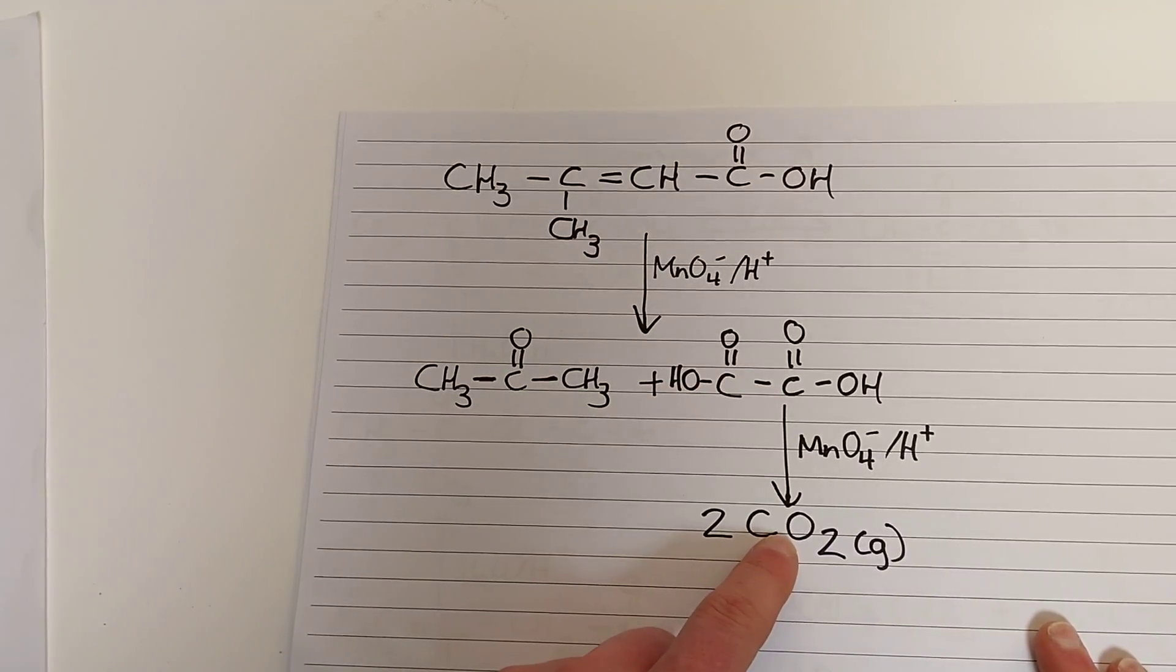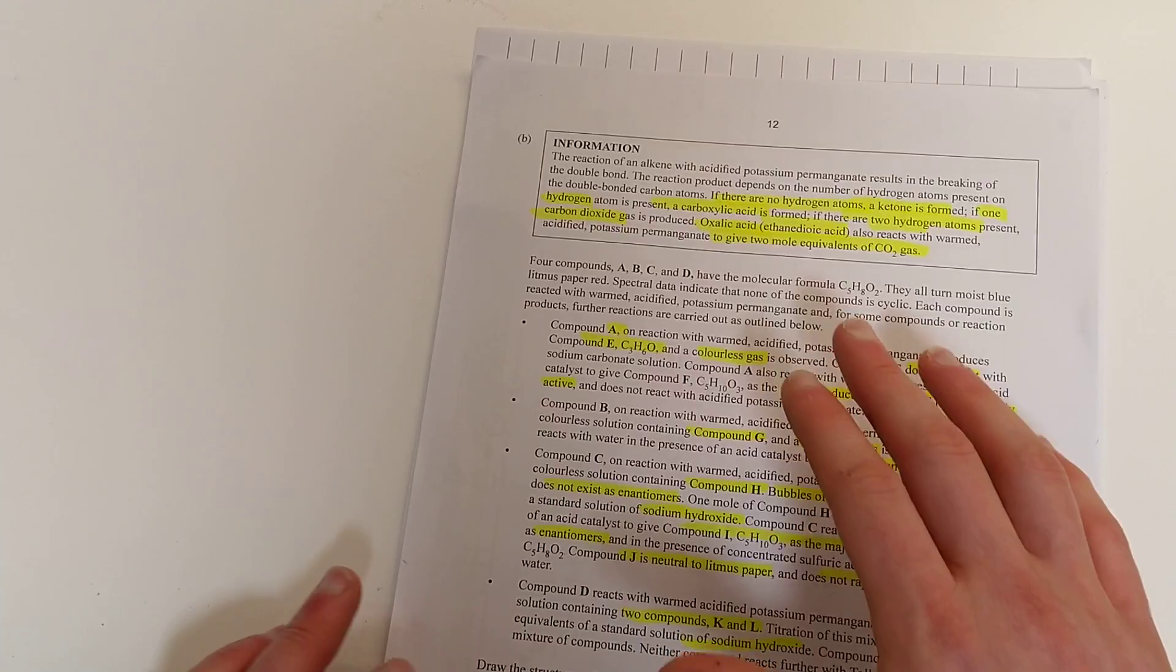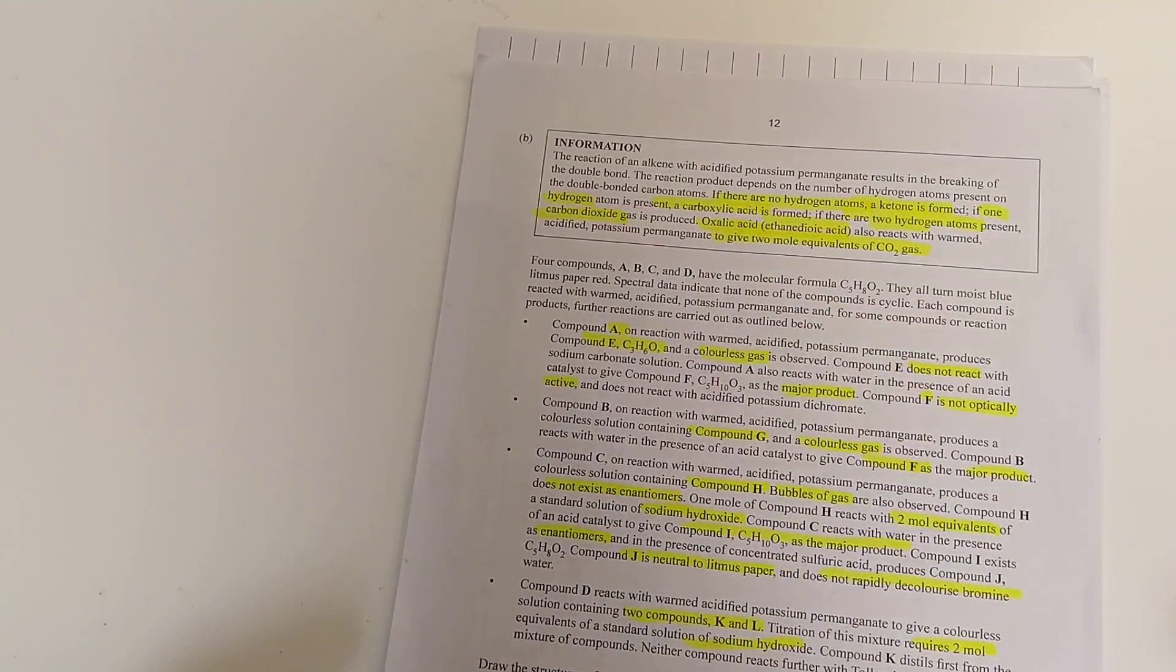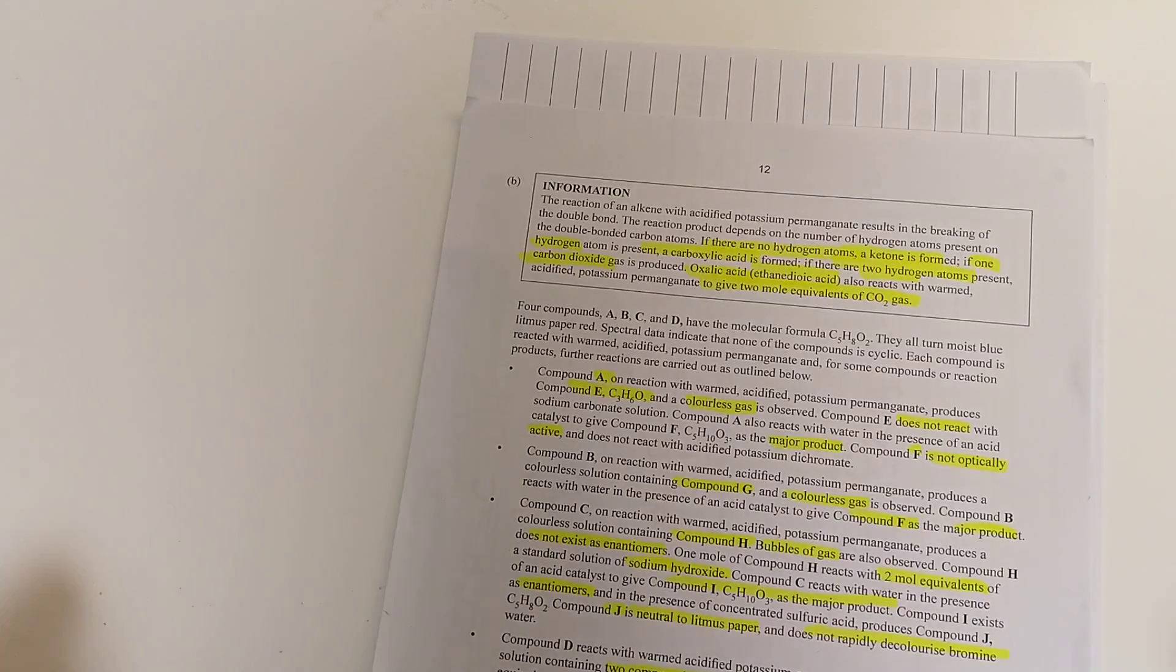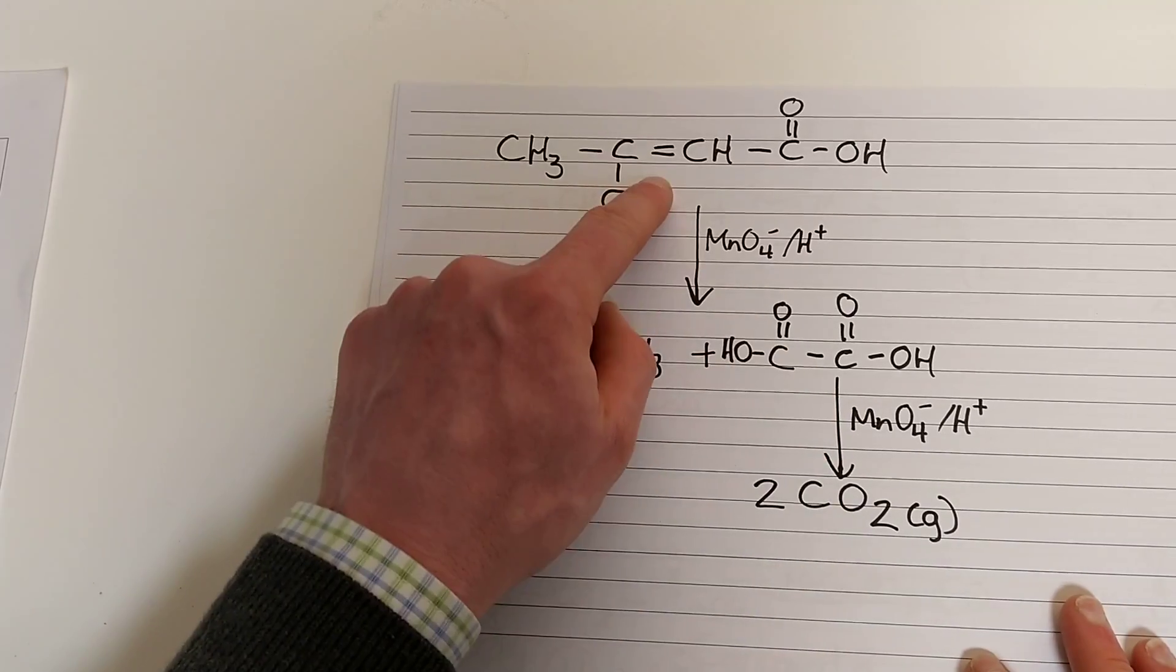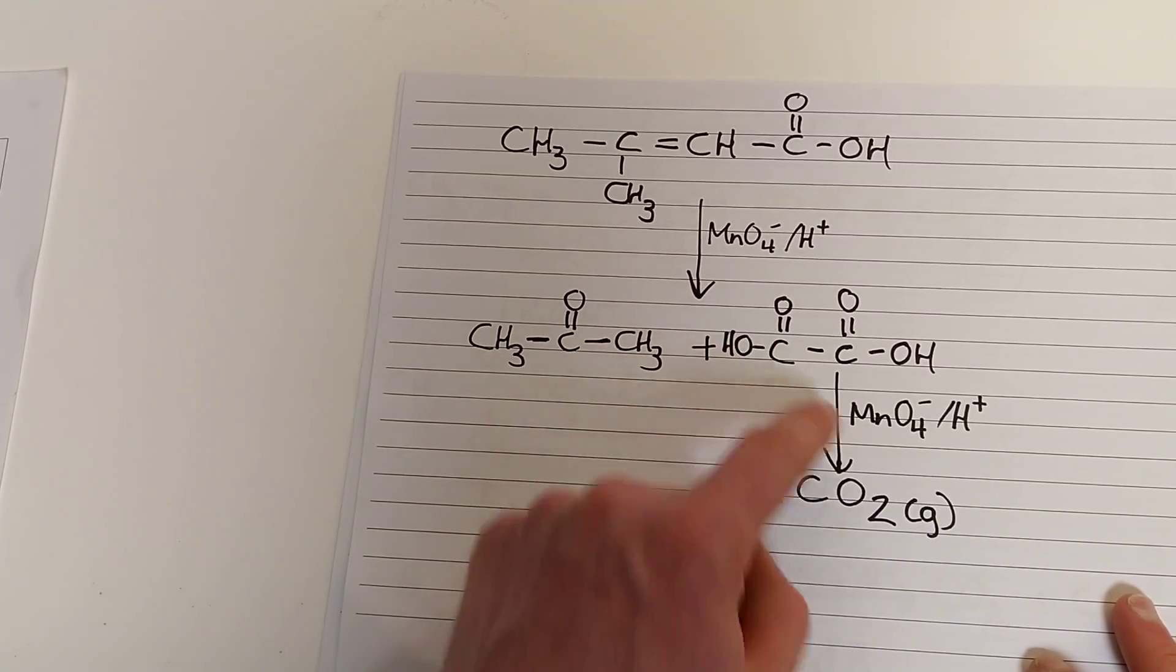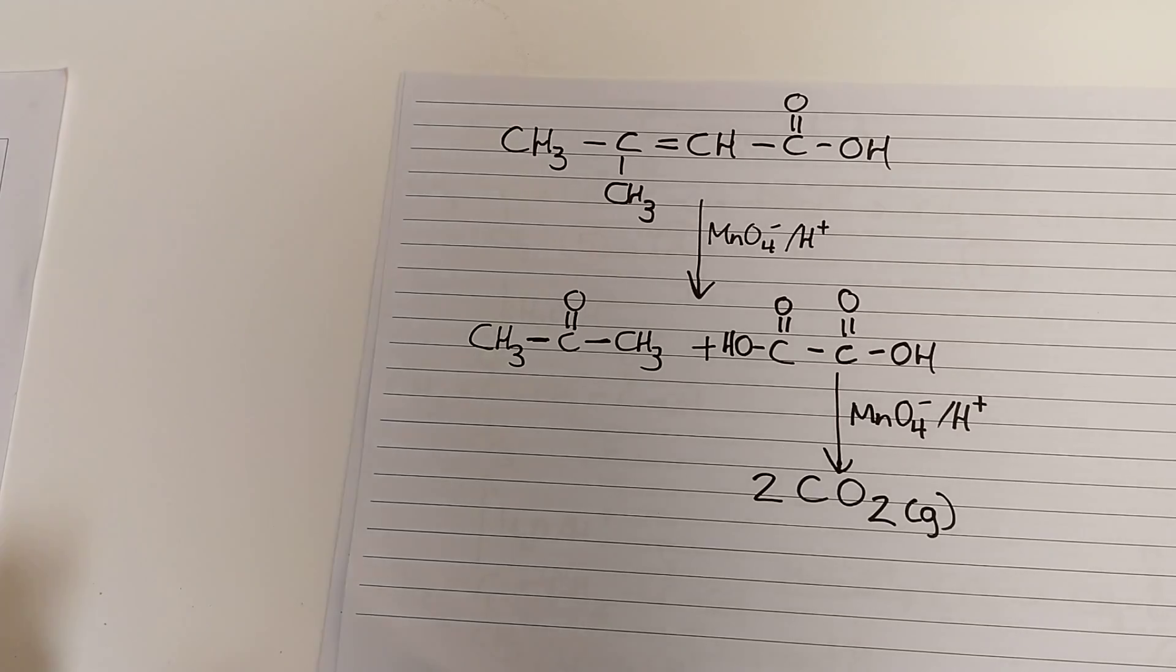Now, I've drawn a further reaction step because there's one other thing in the information section I hadn't mentioned. And that's that when oxalic acid or ethanedioic acid is formed in one of these reactions, it will further react with the permanganate that's already present in the reaction vessel to give two mole equivalents of CO2. So, what is ethanedioic acid? If we break down the name, ethane meaning two carbons, dioic acid meaning two carboxylic acid functional groups. Yeah, that's what I just drew. That's the thing that formed when compound 5 reacts with acidified permanganate. So this is ethanedioic acid and we see that according to the rules, it needs to form two equivalents of CO2.